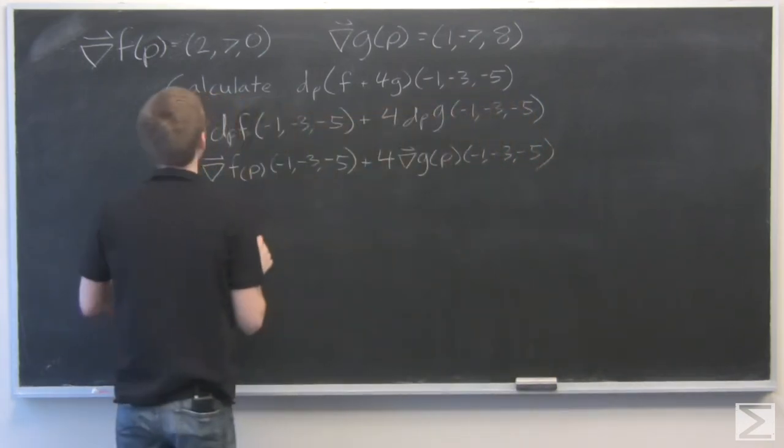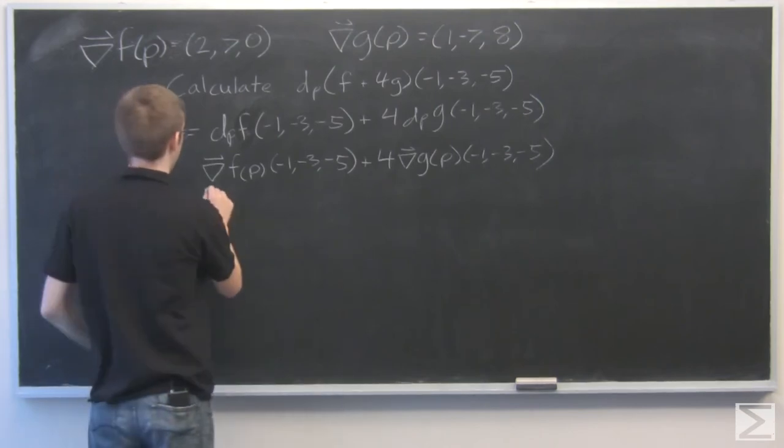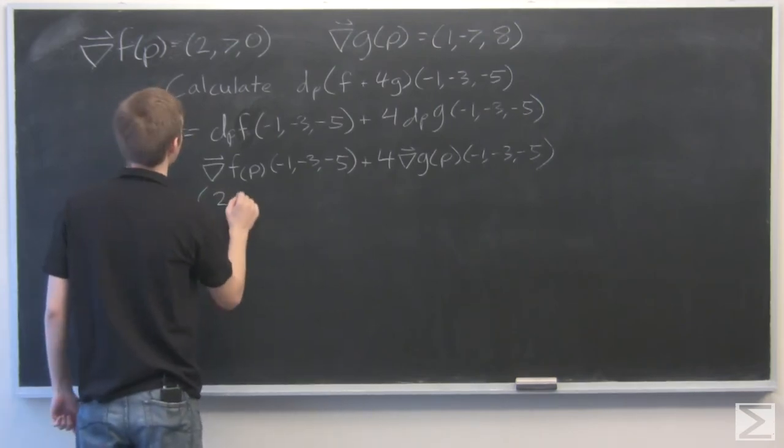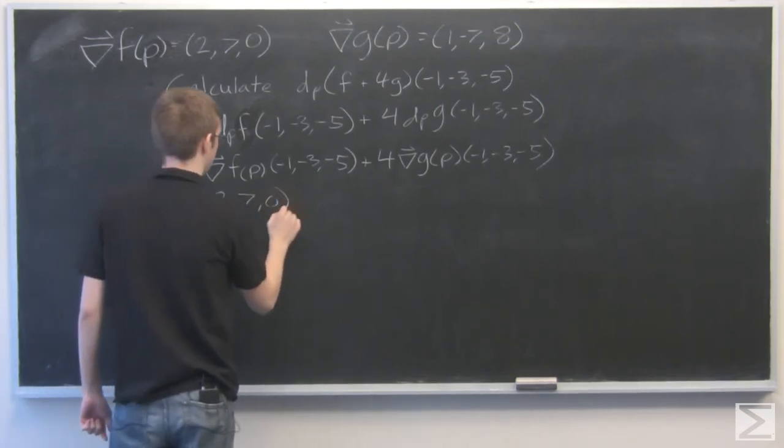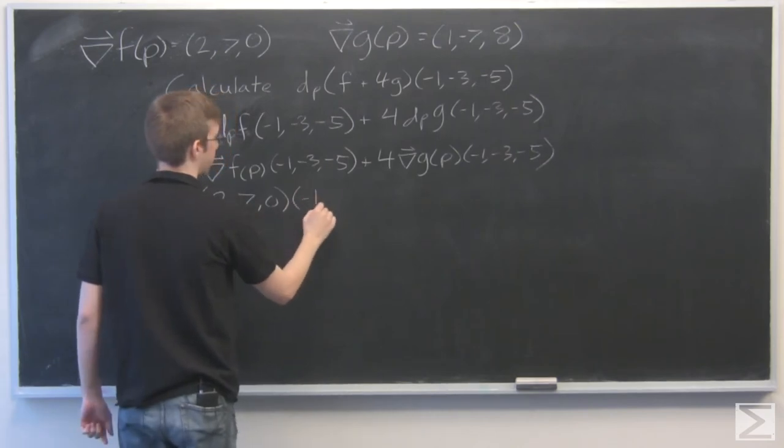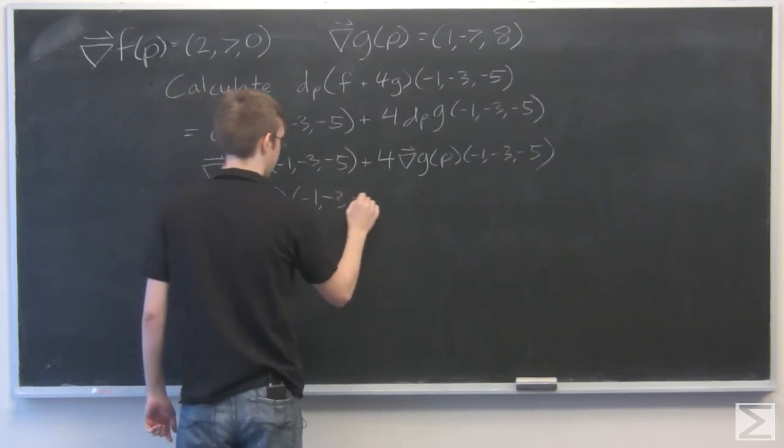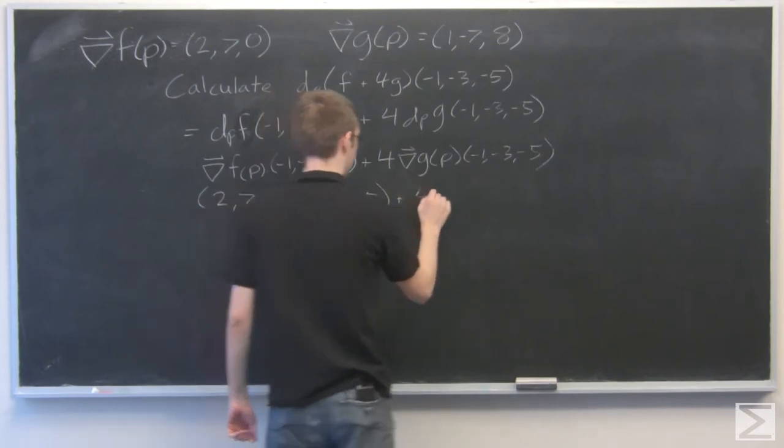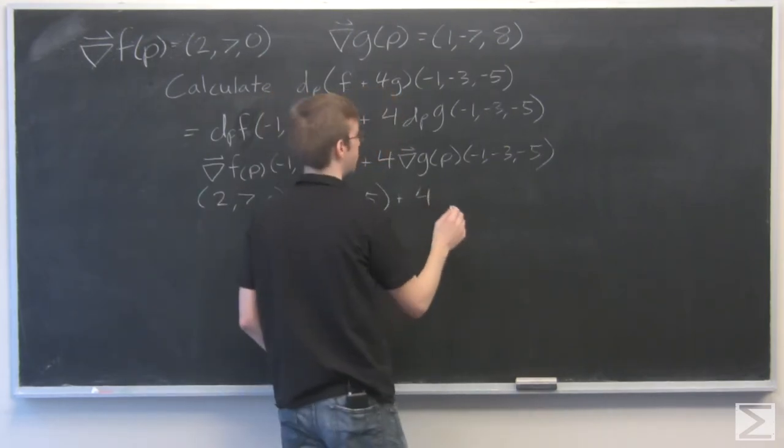And that is equal to, we just plug in what we're given, 2, 7, 0 dot product with negative 1, negative 3, negative 5, plus 4 times 1, negative 7, 8.